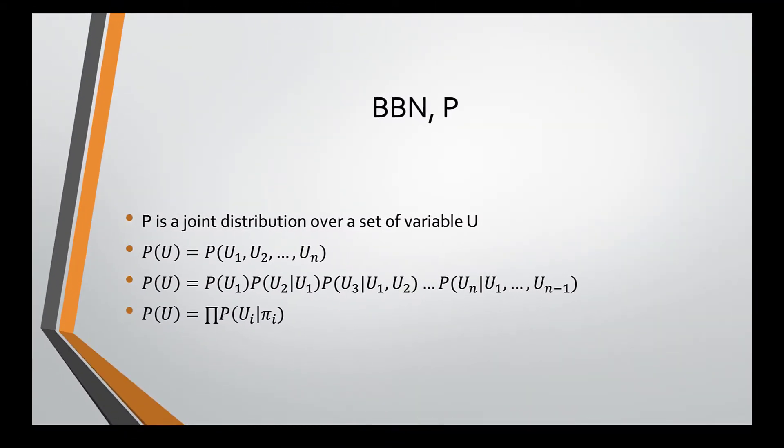The joint distribution P is the second major component of a Bayesian network. It is simply the joint distribution over all the variables U in the Bayesian network. The joint distribution of U may be written as probability of U is equal to probability of U1 comma U2 comma and so on up until U of n. However, we can use the chain rule to factorize the joint distribution as the probability of U is equal to the probability of U1 times the probability of U2 given U1 times the probability of U3 given U1 and U2 and so on up until the probability of U n given U1 through U n minus 1.